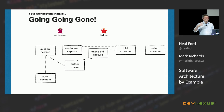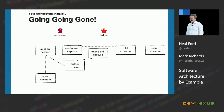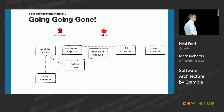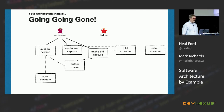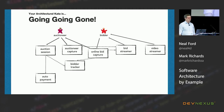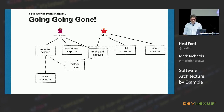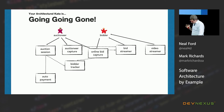Once you get past the sticky notes phase, you can start creating actual components — one-to-one mappings from the sticky notes — including dependencies and information flow between components.